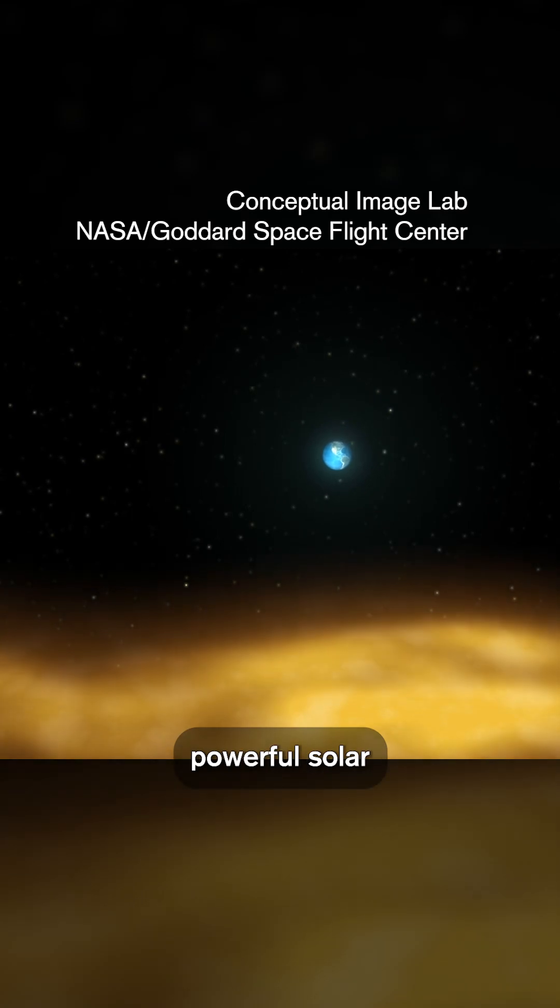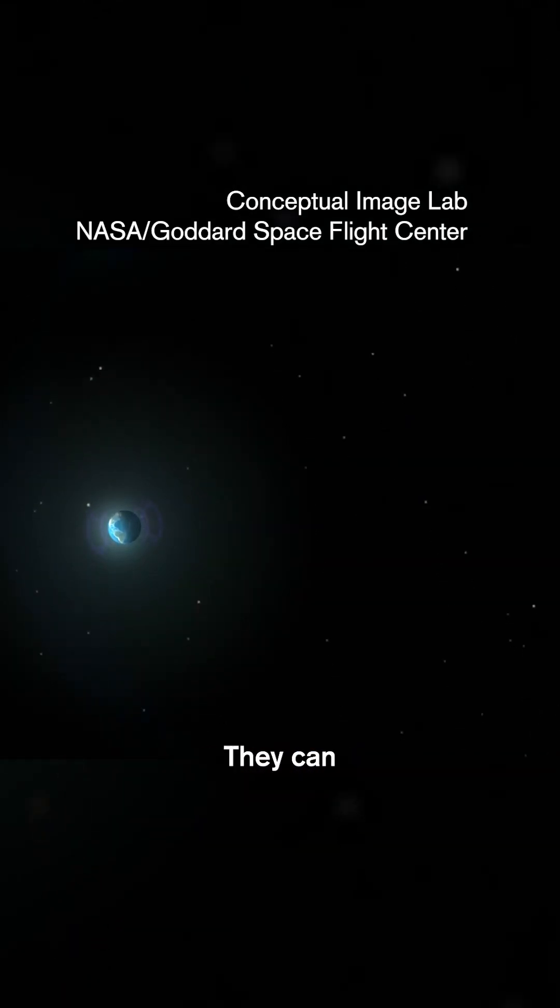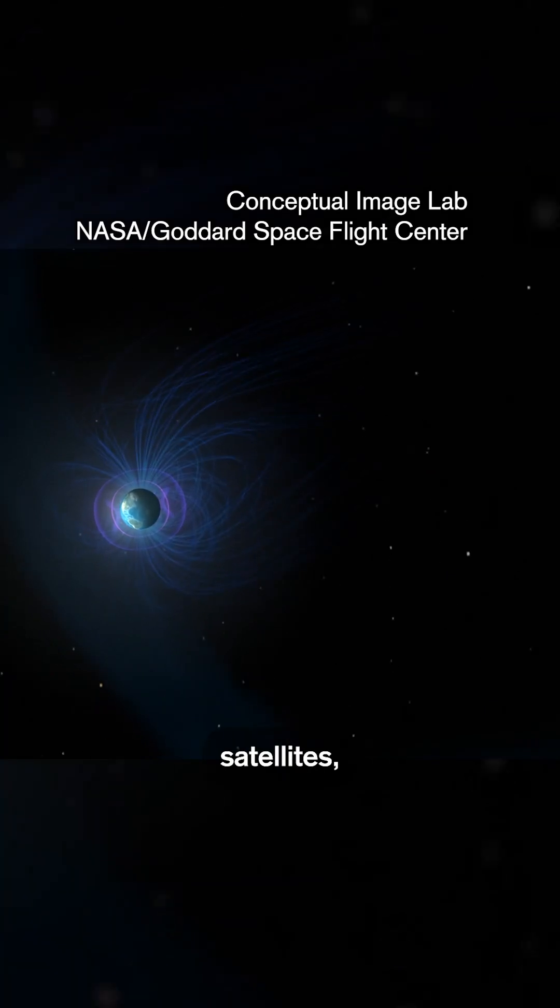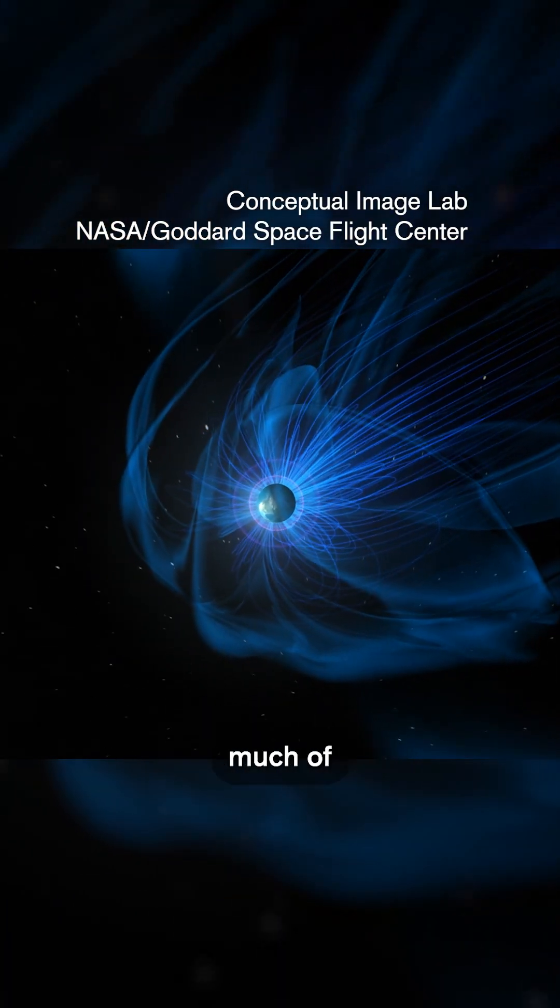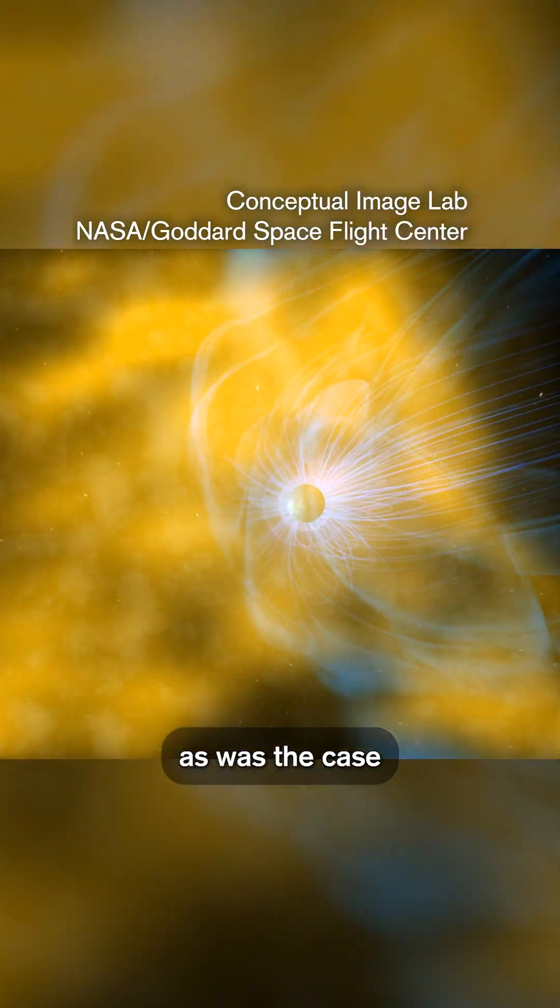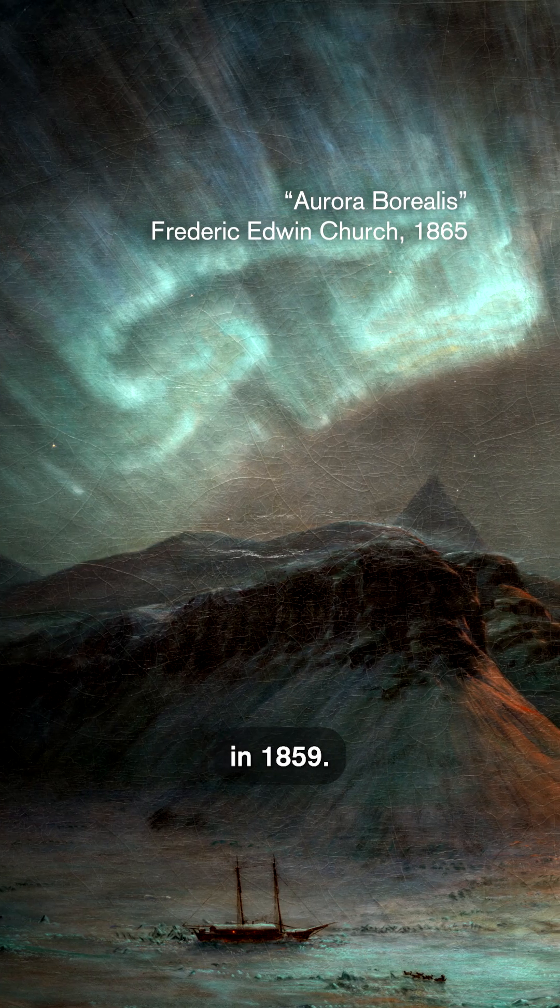The most powerful solar events affect Earth's magnetic field. They can cause blackouts, damage satellites, and even produce brilliant auroras visible across much of the globe, as was the case during the Carrington event in 1859.